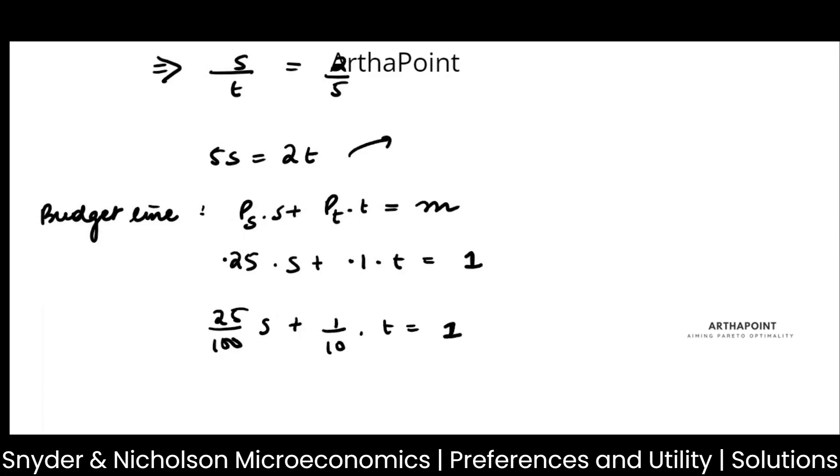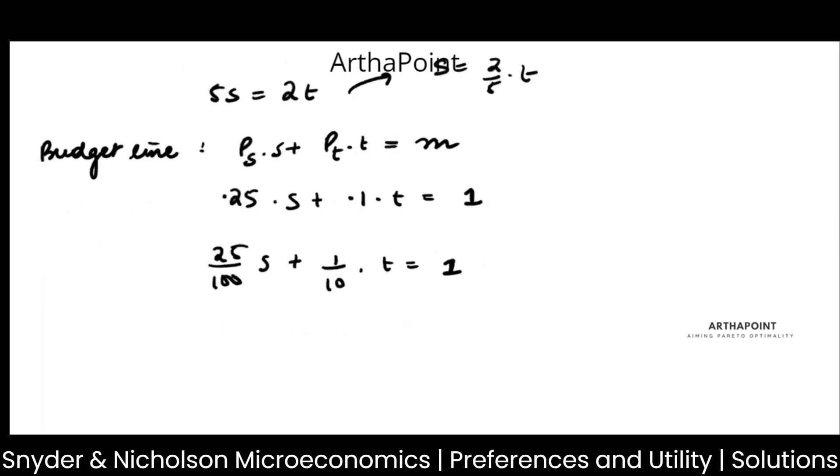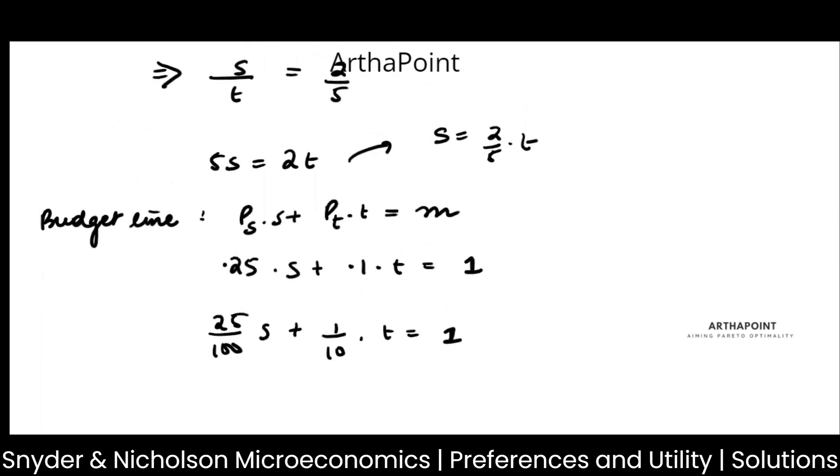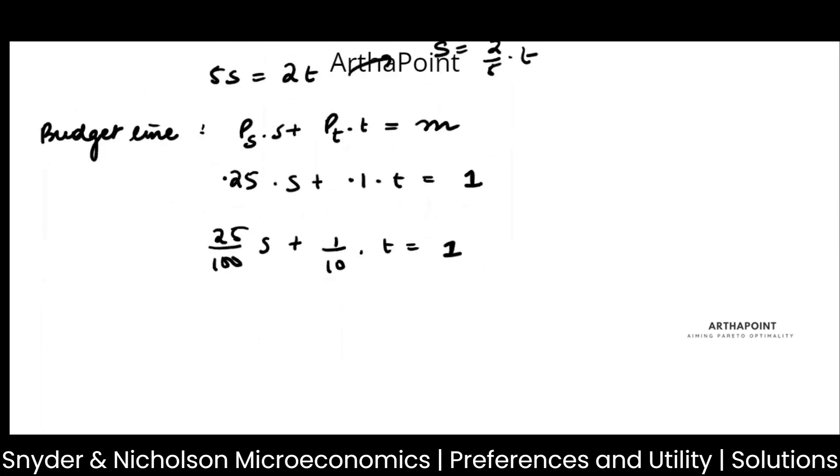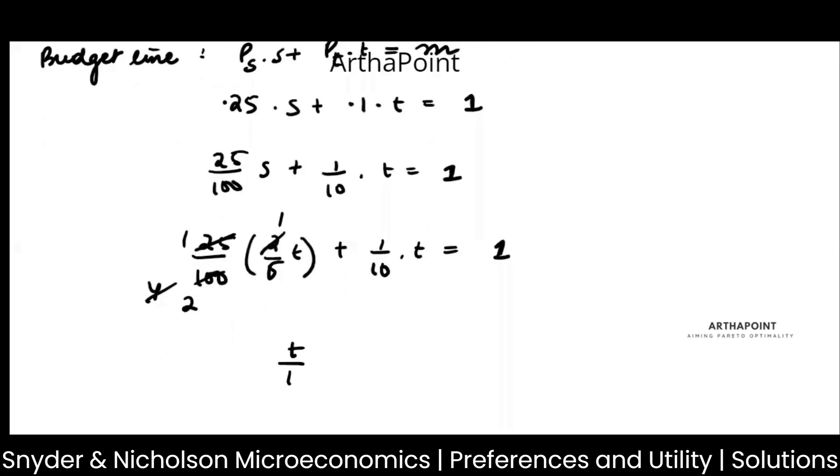But from here we know that S is 2 by 5 into T. So I'm just going to put 2 by 5 T here plus 1 by 10 into T is equal to 1. So this will be T by 10 plus T by 10 is equal to 1. 2T by 10 is equal to 1.